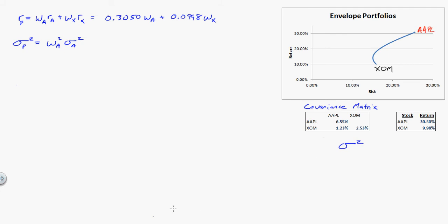And remember, by the way, that sigma squared of X is the variance of Exxon or X. Sigma subscript X is equal to the standard deviation of X, and sigma X comma A is equal to the covariance of X with A. So just get those terms down.